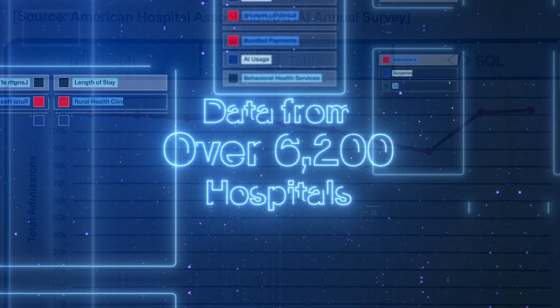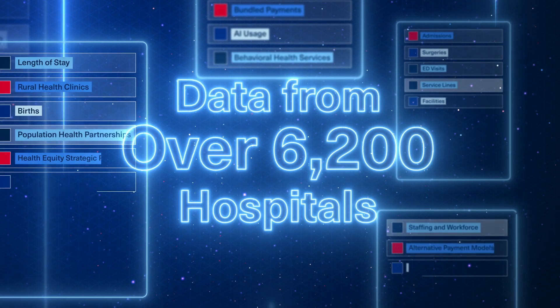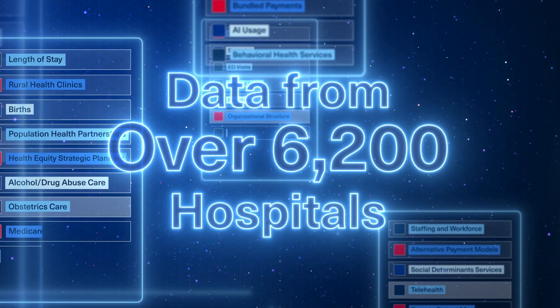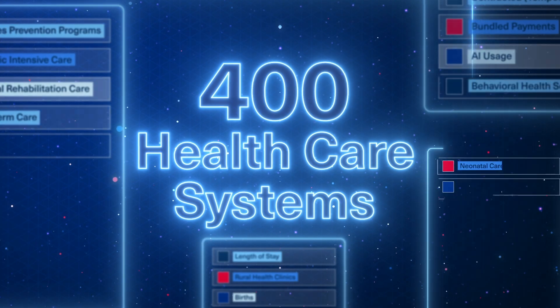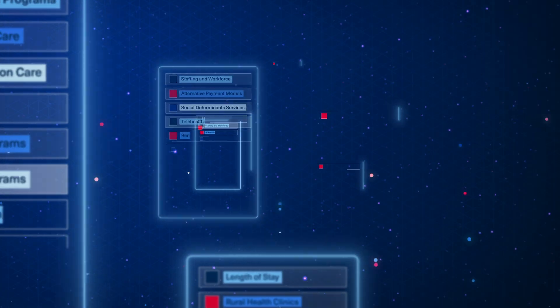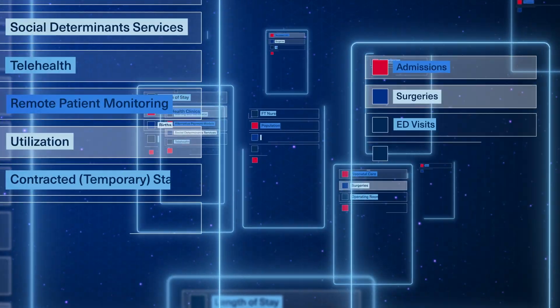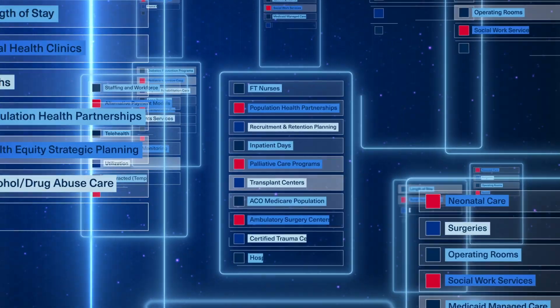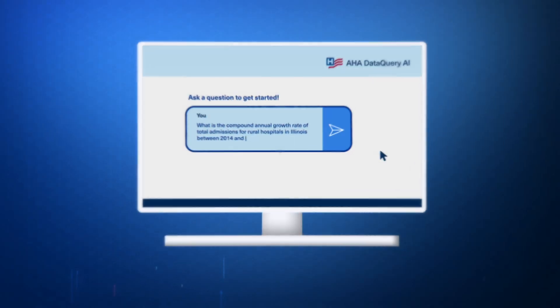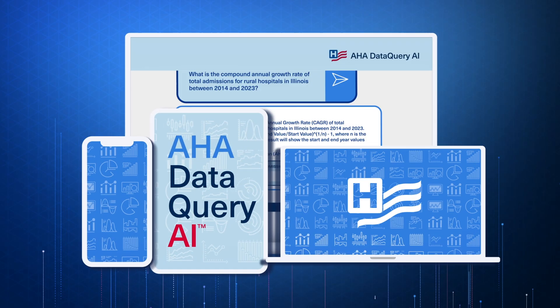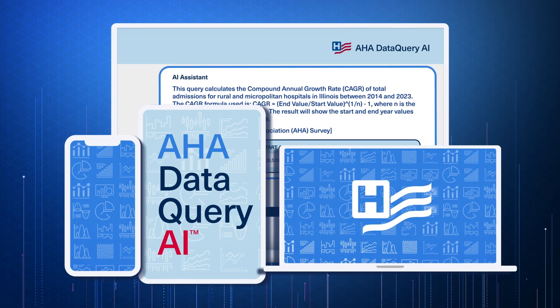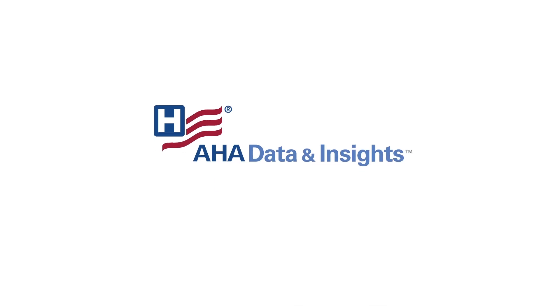Powered by data from over 6,200 hospitals, 400 healthcare systems, and CMS cost reports, AHA Data Query AI makes it easy and effortless to access insights on hospital operations.